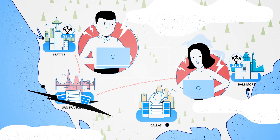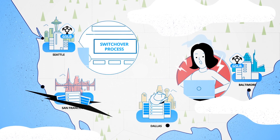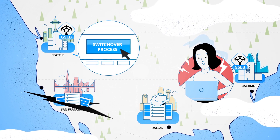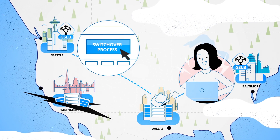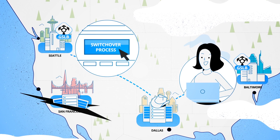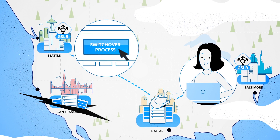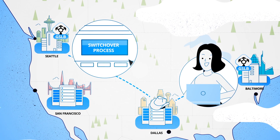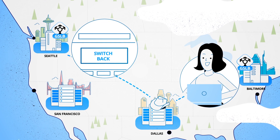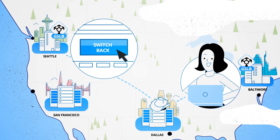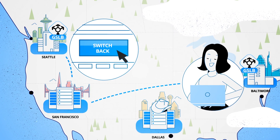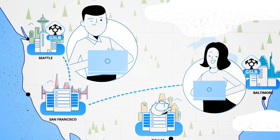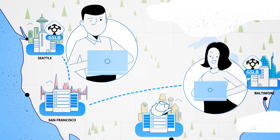Disaster time? One click from Tom launches the switchover process and DNS GSLB automatically directs user traffic towards the backup application. And it's just as easy to return to normal operations once the incident is over.